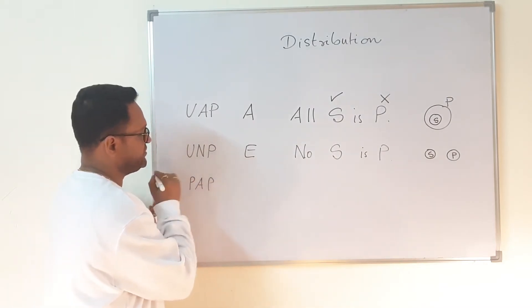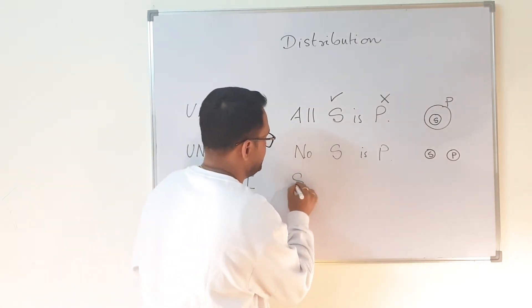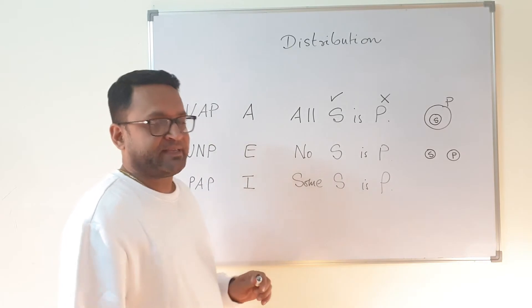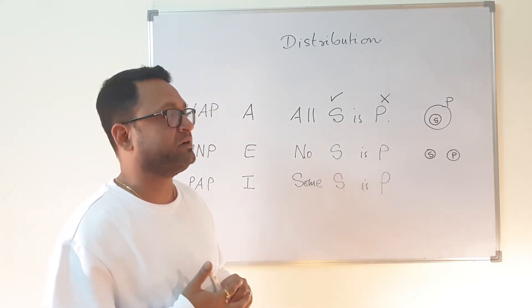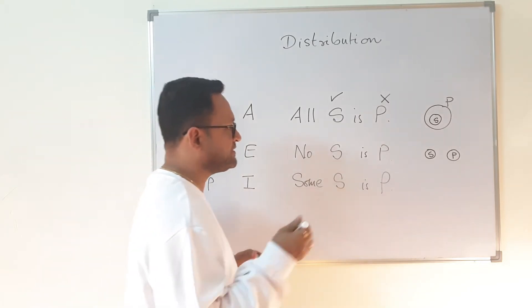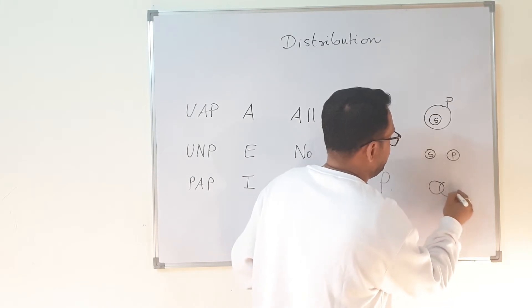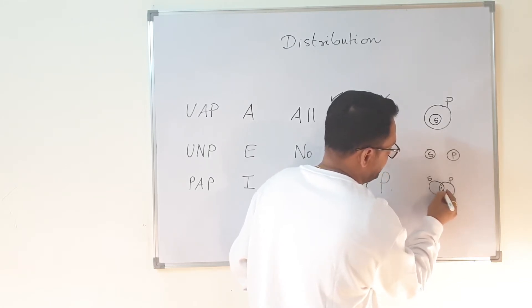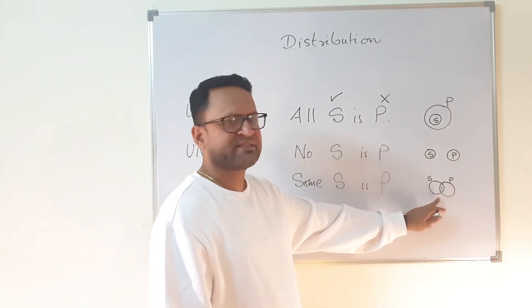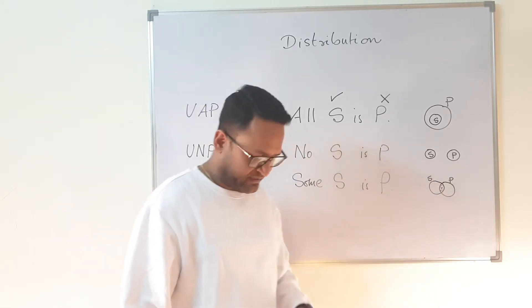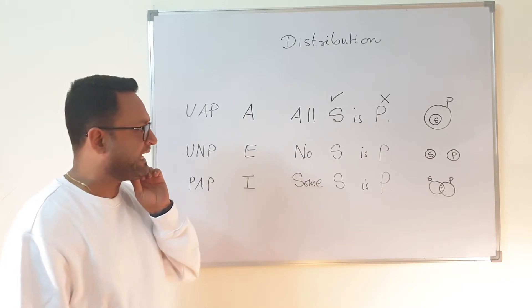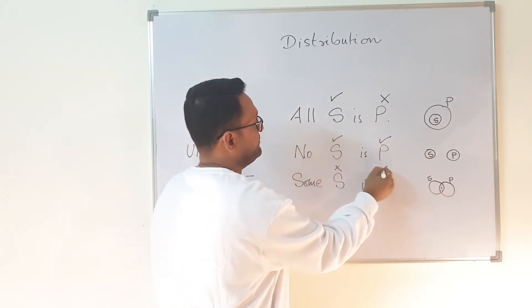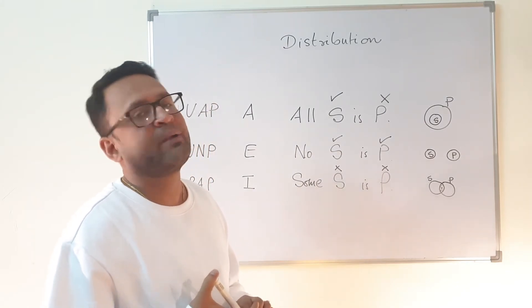Now the particular affirmative proposition I, represented as 'Some S is P'. Am I talking about all S? Definitely not. Am I talking about all P's? Also not the case. In the Euler diagram, we are only talking about the intersection part. So I am talking about some S but not all, and some P but not all. Neither S nor P is taken in its entire denotation, so neither term is distributed.